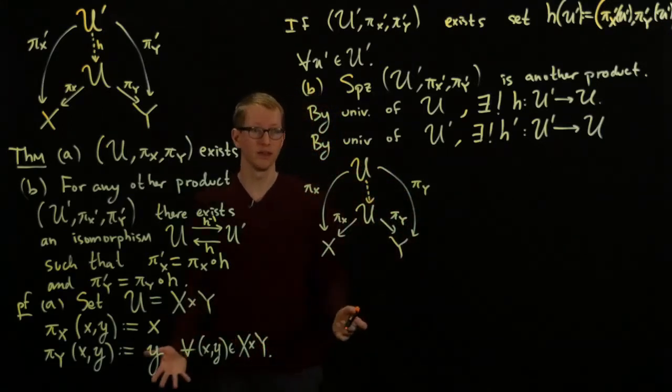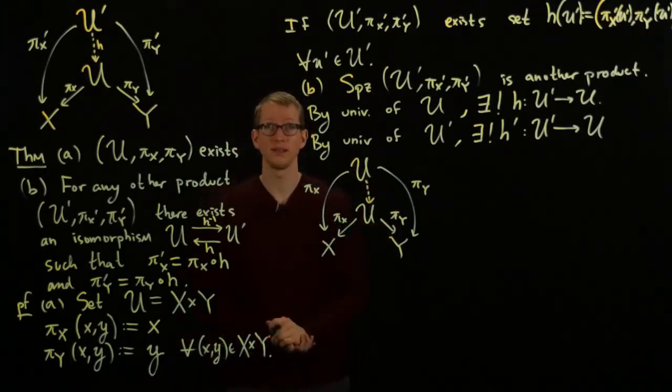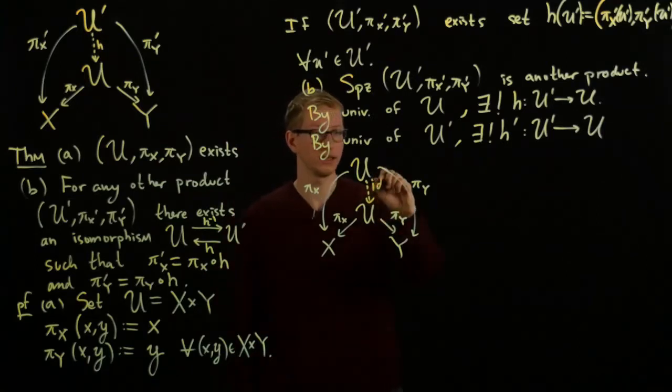But what's the only thing, such that when I precompose, I get exactly the same thing back? That's precisely the identity. So this is the identity on U.